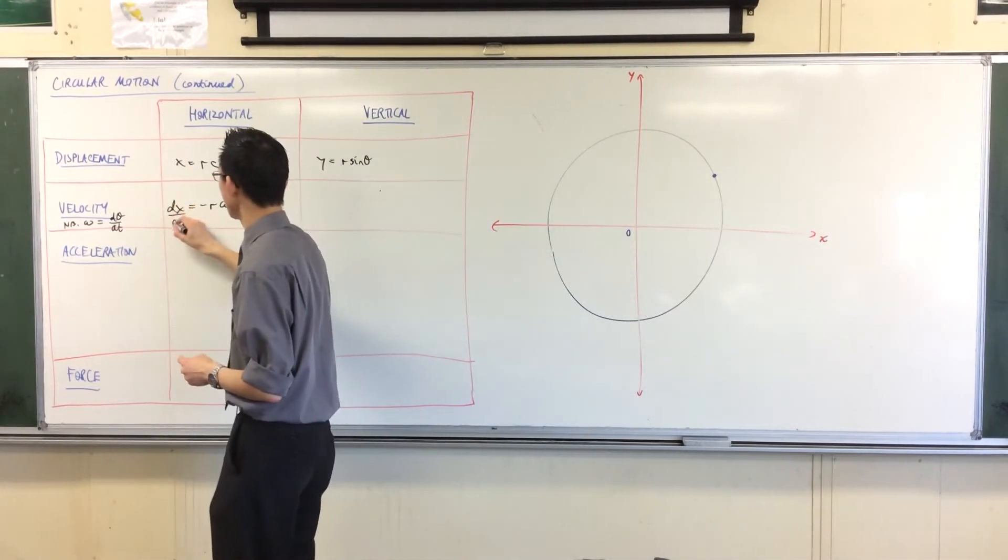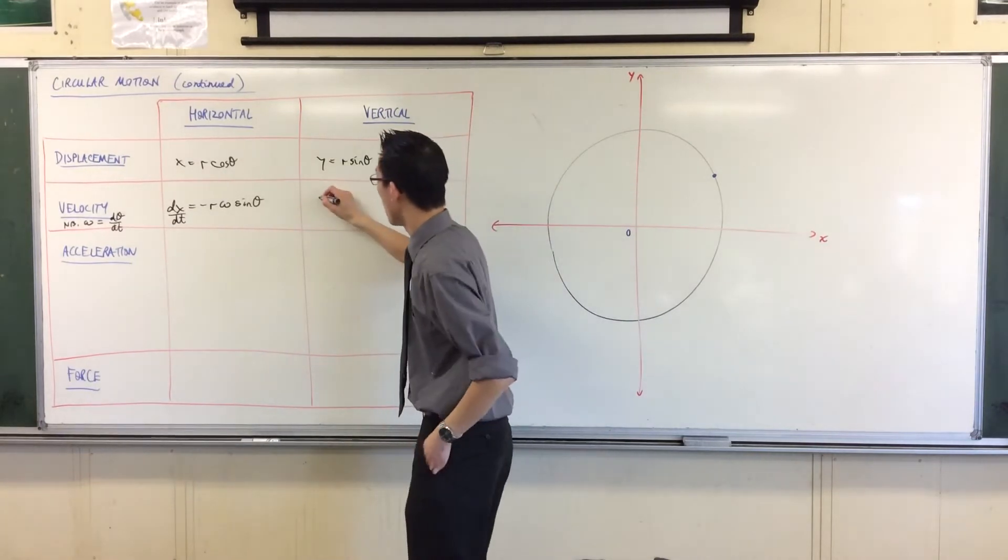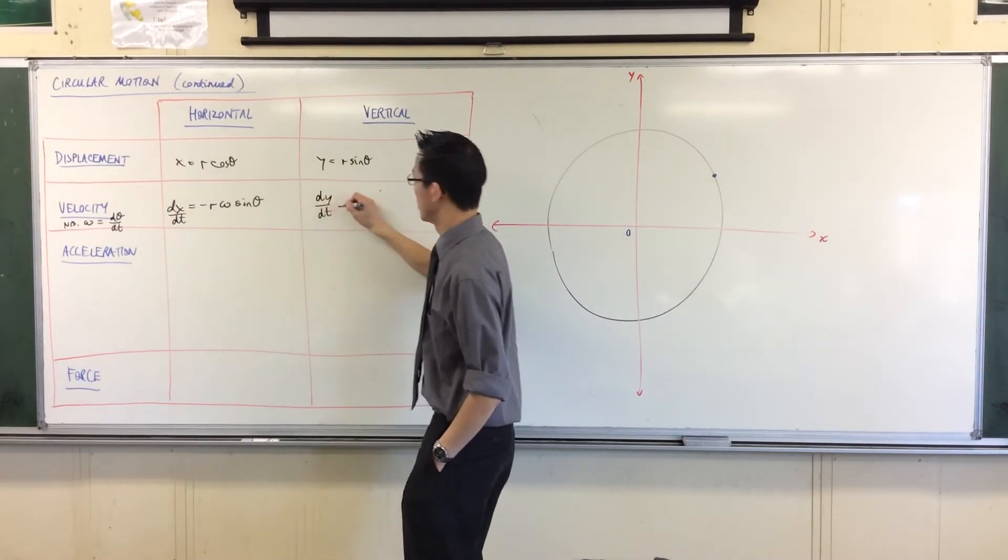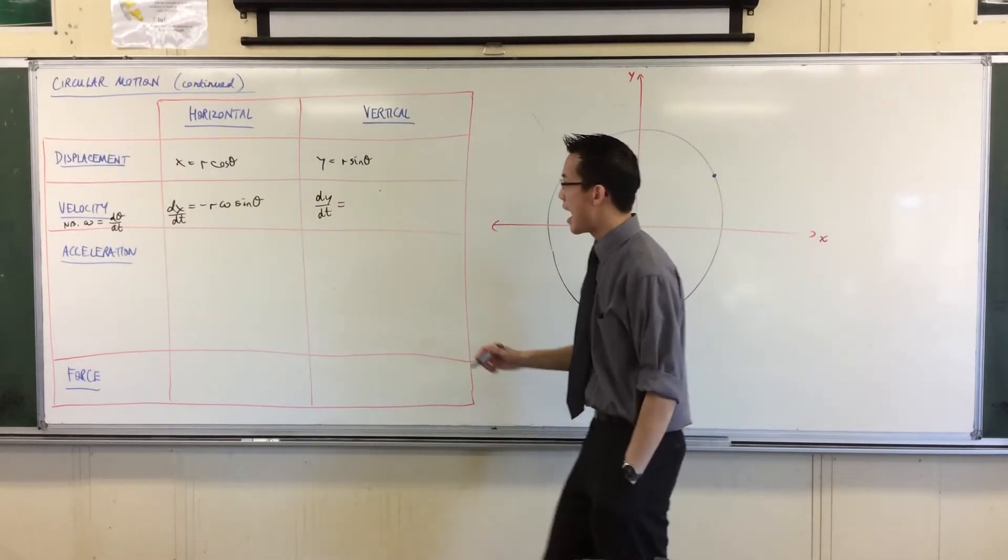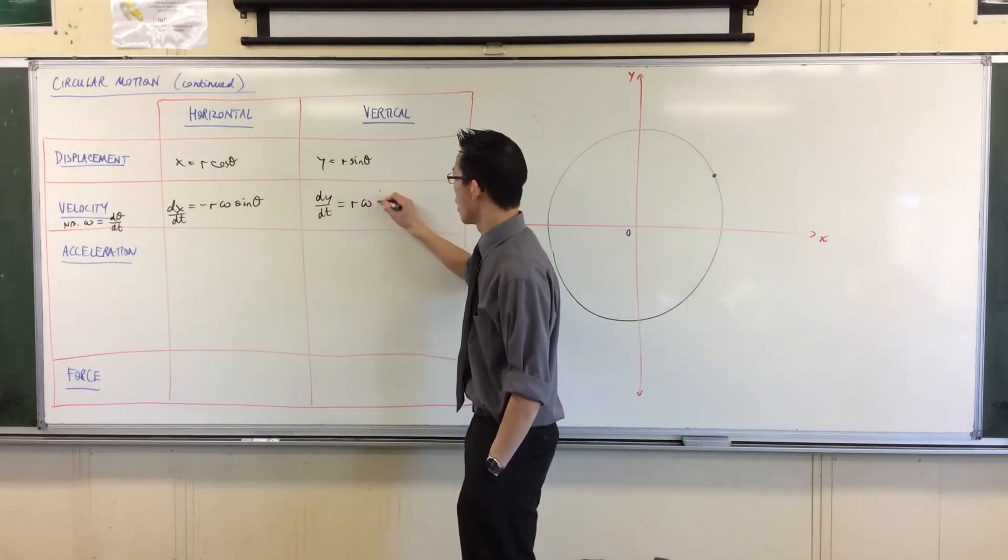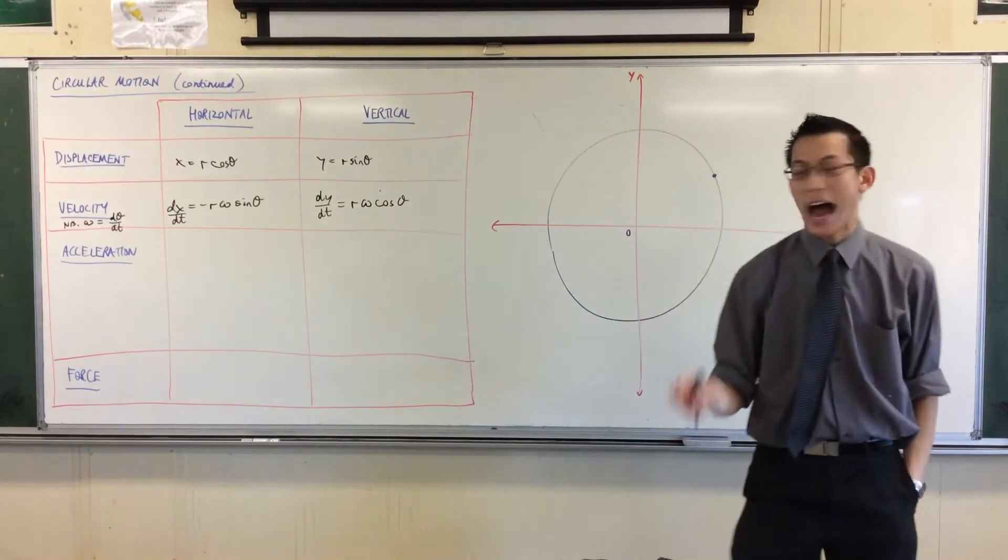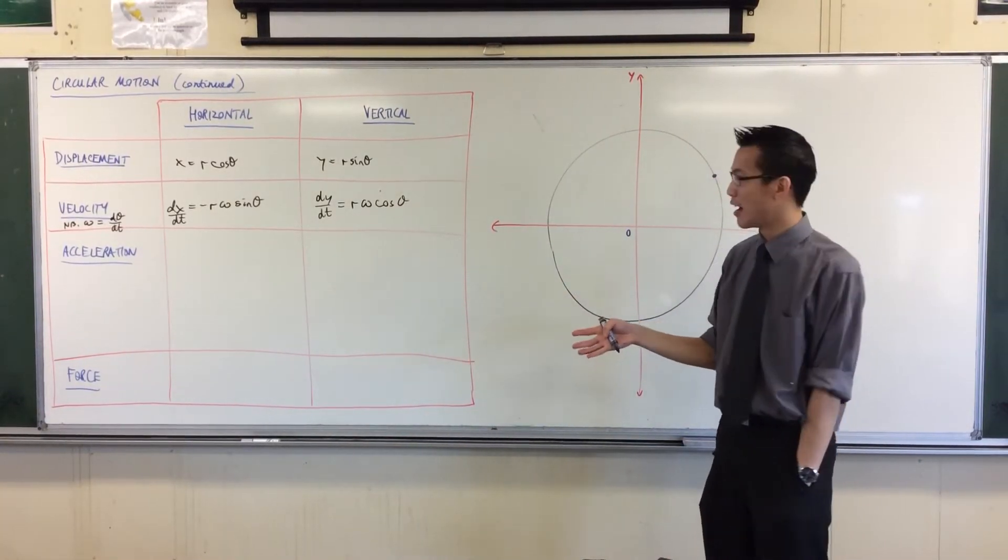And then you can play the similar kind of game with y, your vertical velocity, right? And this is R sine theta, so you don't get a negative out of the front, you're just getting R omega cos theta, okay? So, I think that's where I left you yesterday, right?